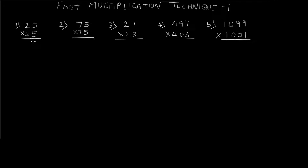This trick is applicable to only certain numbers. There is a condition: for two-digit numbers, the units place digits have to add up to 10. In question one, the first number is 25 and the second number is 25. At the units place we have 5 and 5 — 5 plus 5 equals 10, so the first condition is satisfied. The second condition is that the tens place digits must be equal. We have 2 and 2, so both conditions are satisfied.